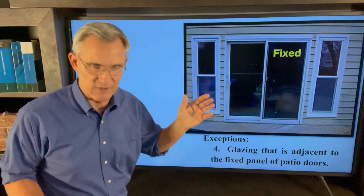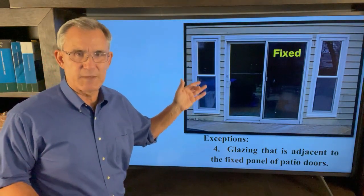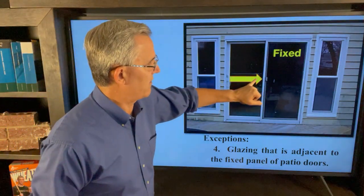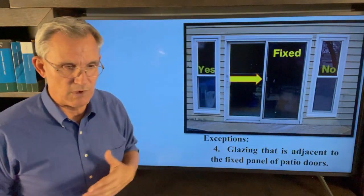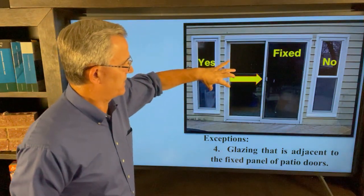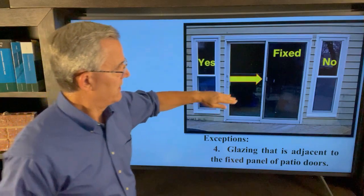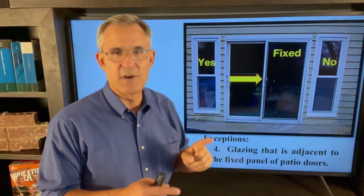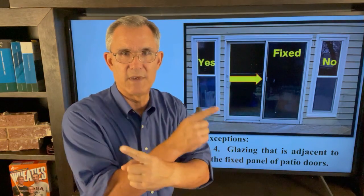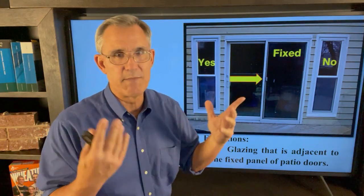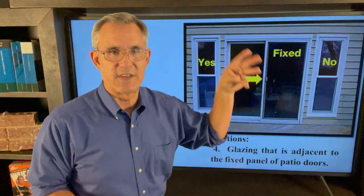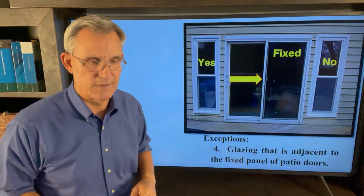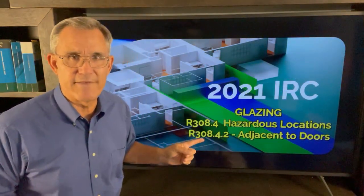Finally, exception number four, which comes up a lot with patio doors: glazing adjacent to the fixed panel of a patio door. In a typical setup with a sliding door and a fixed panel next to it, within 24 inches of the door itself — yes, that requires safety glass. But the fixed panel on the far side — no, that does not have to be safety glass. When new windows are going in, make sure your installers know which panel gets tempered glass and which doesn't, because I've seen them mixed up. The door and the panel next to it are safety glass per the rules, but the fixed panel beyond that is one of the exceptions.